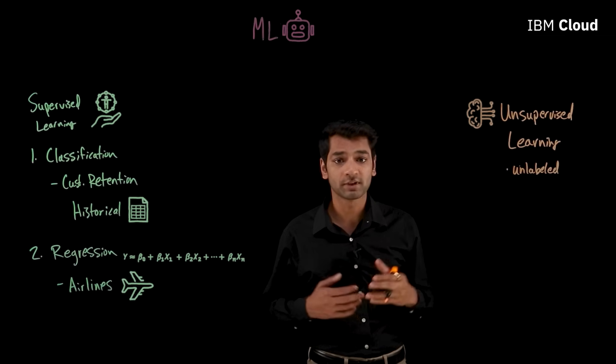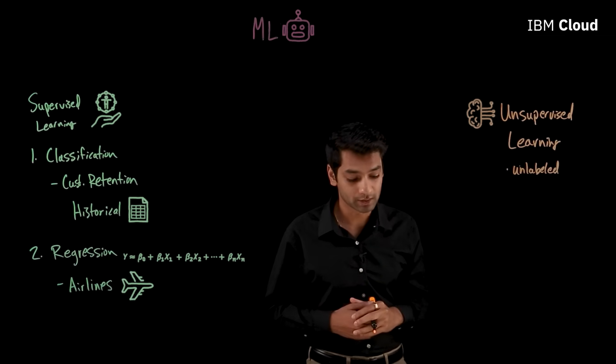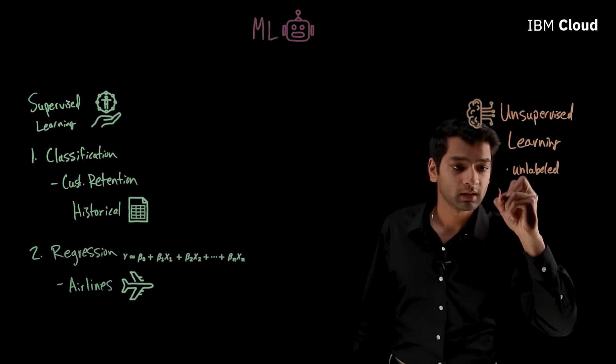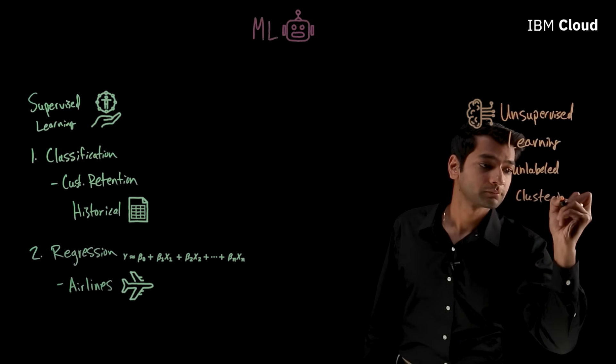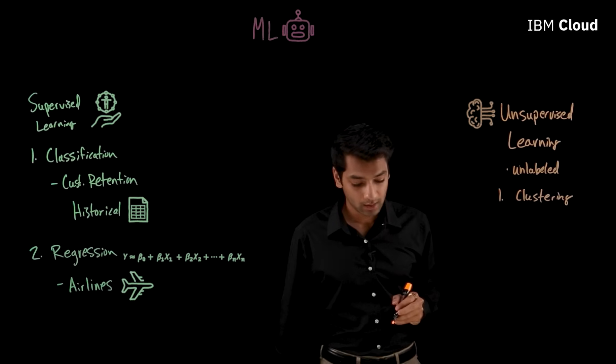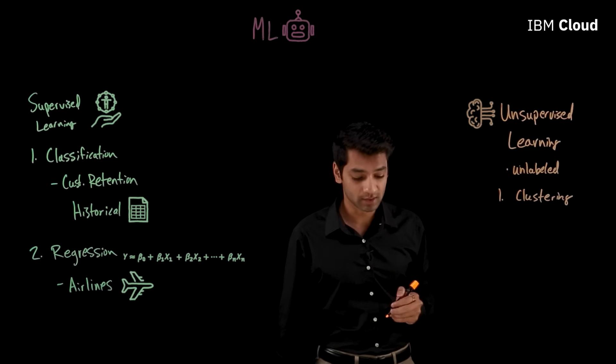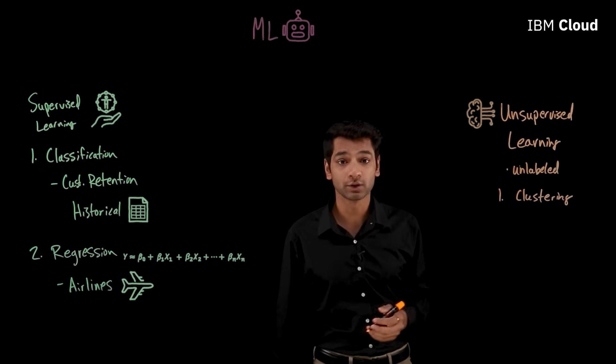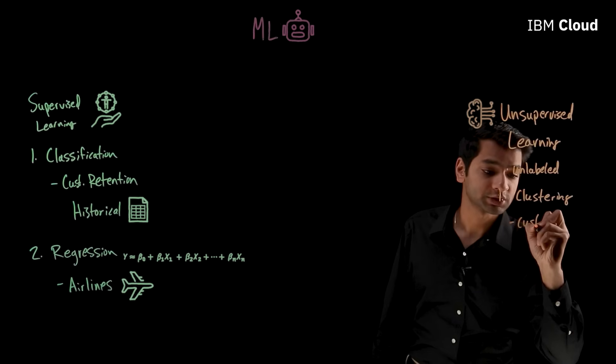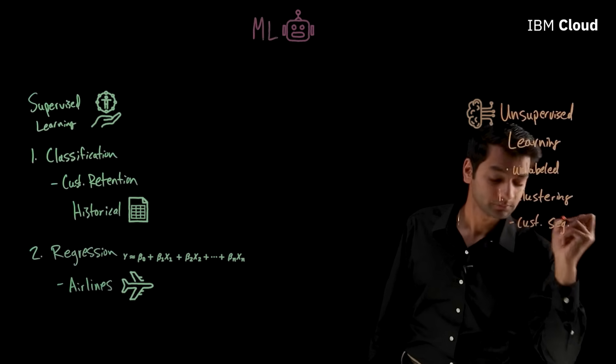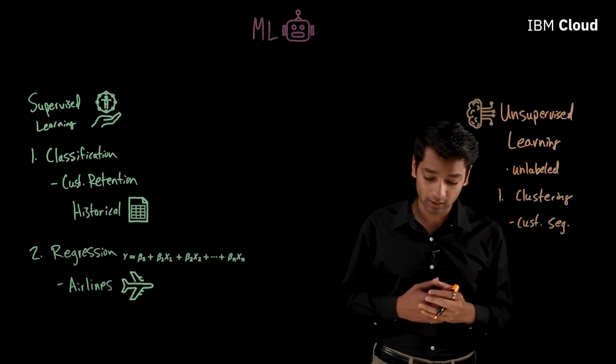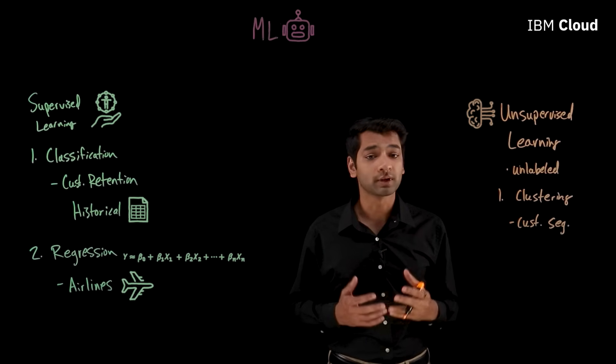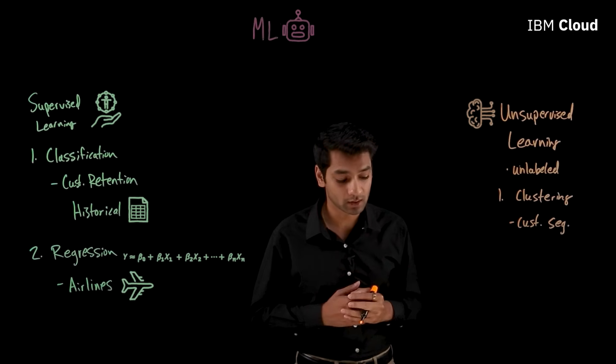So again, let's talk about the different techniques for unsupervised learning. One method is clustering. And a real world example of this is when organizations try to do customer segmentation. So when businesses try to do effective marketing, it's really critical that they really understand who their customers are.